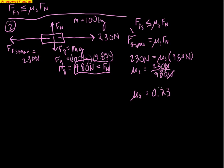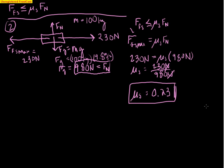A couple of things to notice: this is a fraction, a number less than 1. In general, coefficients of friction will always be less than 1. Also, the units cancel out — so what are the units for the coefficient of friction? There are no units; this is a unitless quantity. It's really just a ratio of the force of friction to the normal force. So 0.23 is the coefficient of static friction between the couch and the floor.